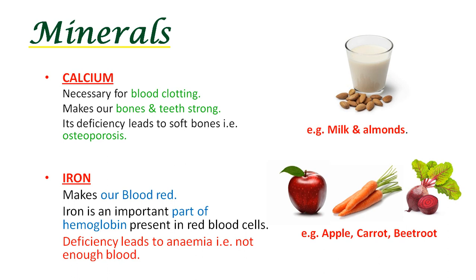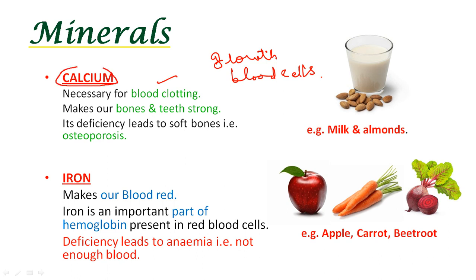Now, minerals. Minerals are elements in the form of salts. They are needed for proper growth and formation of blood cells. They also help to make our bones healthy and strong, and are important for performing vital functions of the body. Our body needs some minerals in large quantities and some in very small quantities. For example, calcium and phosphorus are required in good quantity for the formation of strong and healthy bones. Zinc, potassium, and iodine are required in very minute amounts, though they are essential for our body.